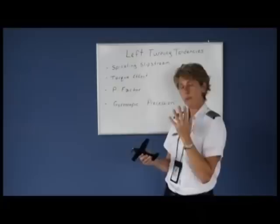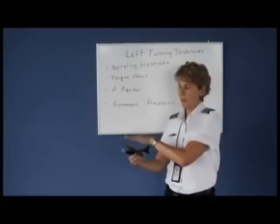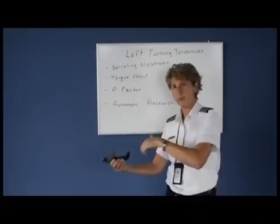Gyroscopic precession is when you have a gyro — which the propeller takes on those gyro properties — and you apply force in one area, it's felt 90 degrees ahead of the rotation, and it'll yaw the airplane to the left. But it's most noted in tail draggers during their takeoff roll, when they push forward to get the tail up off the ground and get on their main wheels.